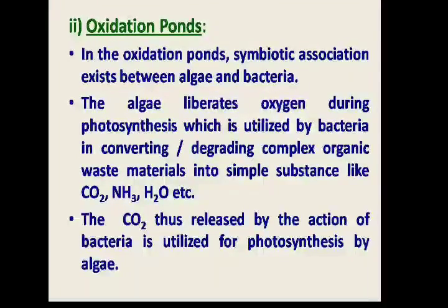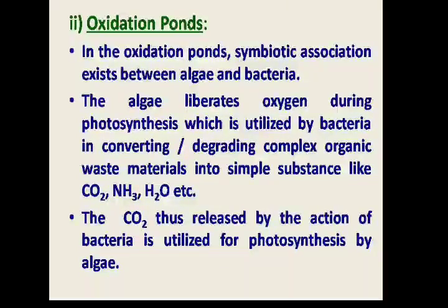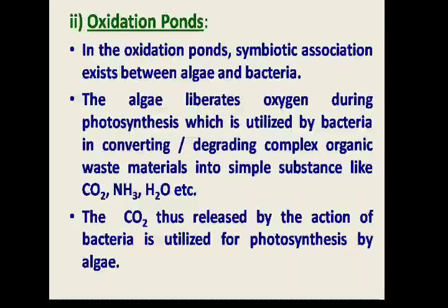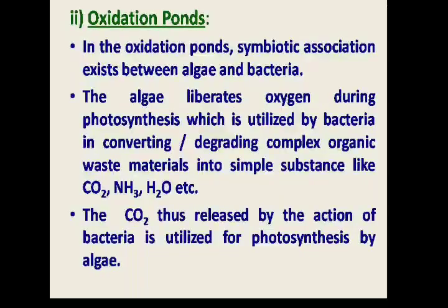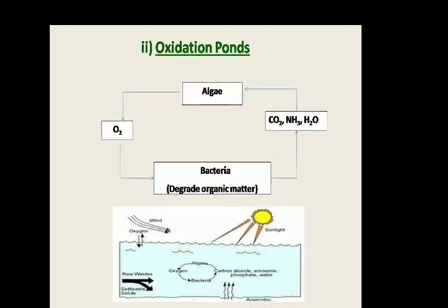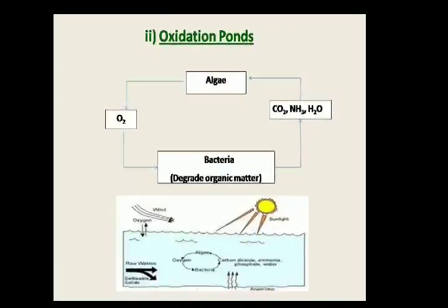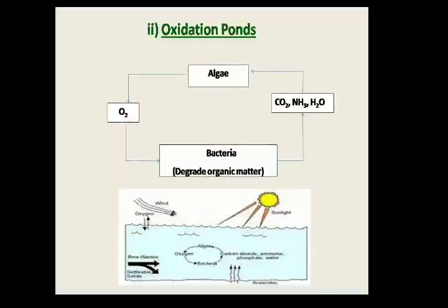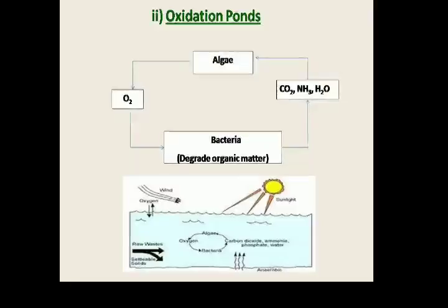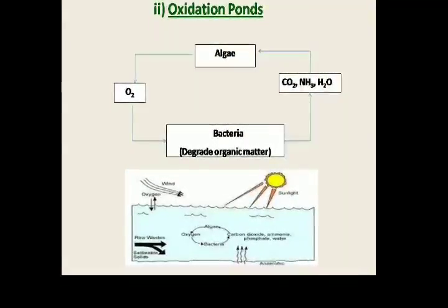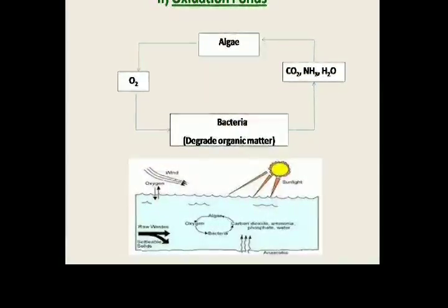Oxidation ponds are an example of Ecto-Symbiosis Association, present between algae and bacteria. In this association, both partners benefit from each other. In the oxidation pond, algae provide oxygen utilized by bacteria. At the same time, bacteria degrade organic matter present in the oxidation pond and produce CO2, ammonia, and other compounds, which are utilized by the algae for their growth.